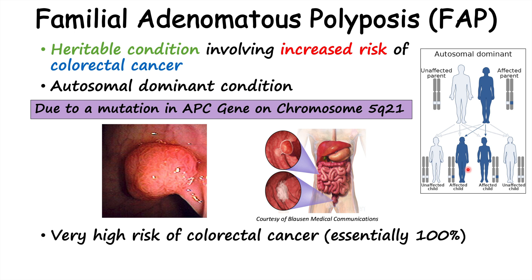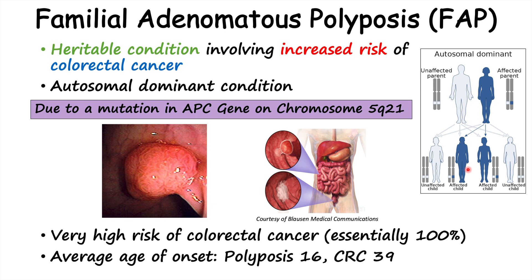This condition has a particularly prominent and significant effect on increasing the risk of colorectal cancer — a very, very high risk. Essentially 100% of patients with this condition will end up with colorectal cancer. There are particular average ages of onset that show just how early in life people are affected. The average age of onset of polyposis — having numerous polyps in the colon — is oftentimes around age 16, very, very young.